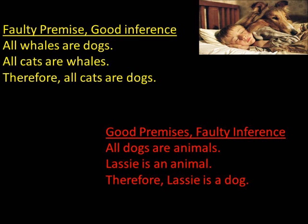On this screen you can see an argument that has a faulty premise — 'all whales are dogs' — but it has a good inference. The way I know it's a good inference is because if I assume the premises are true, the conclusion must follow. The second argument has a good premise but a faulty inference: 'all dogs are animals and Lassie is an animal' are true premises, but you can't infer that Lassie is a dog because there are many non-dog animals like cats.